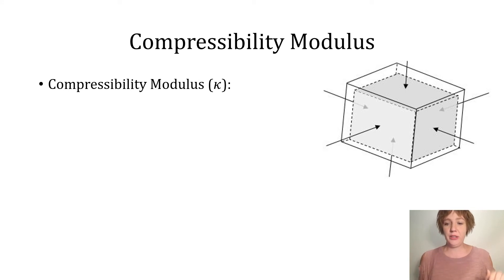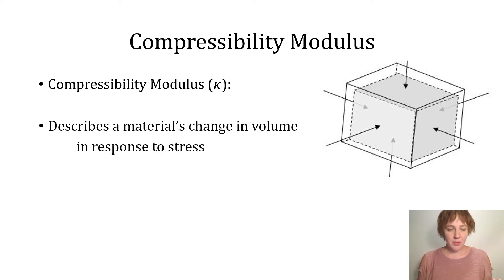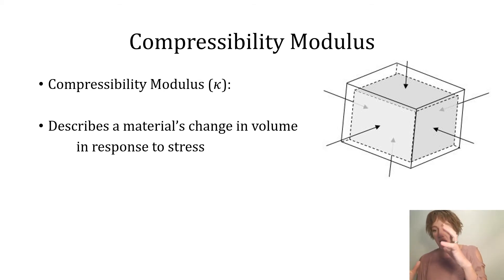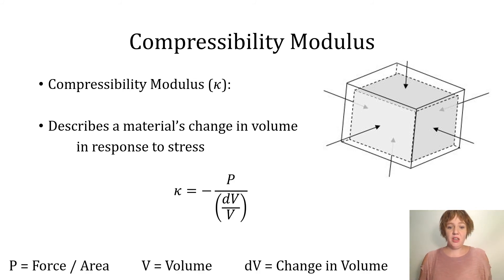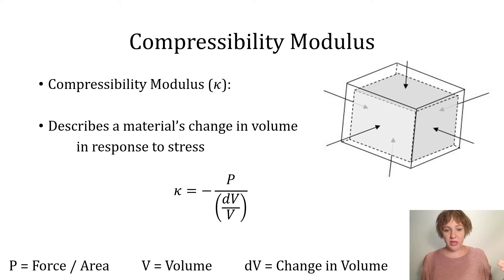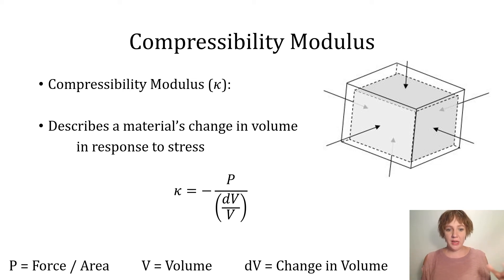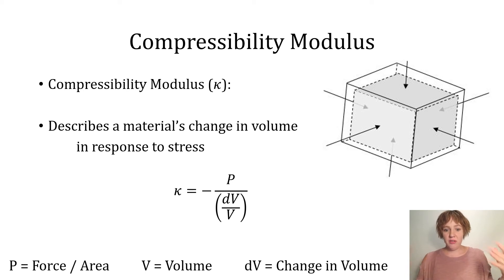The first is the compressibility modulus, kappa. This describes a material's change in volume in response to stress — is it being compressed or expanded? The equation shows it as a proportionality constant relating stress to strain: pressure (stress) on top, divided by the change in volume over the original volume (strain) on the bottom. This compressibility modulus tells us how much strain occurs given a certain amount of stress.